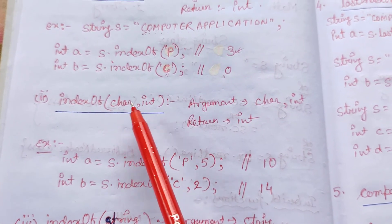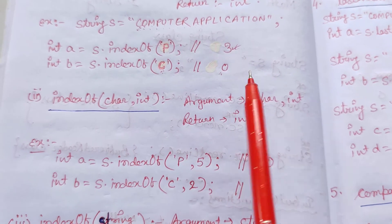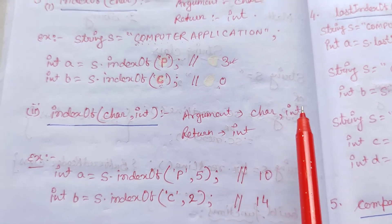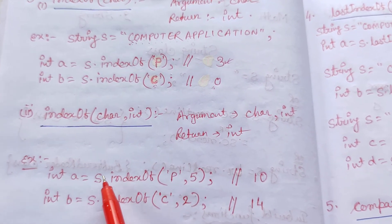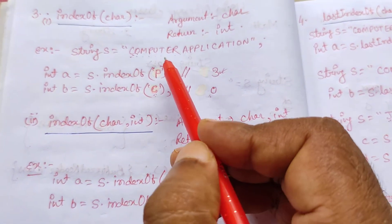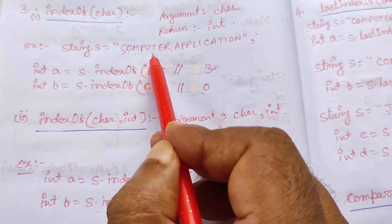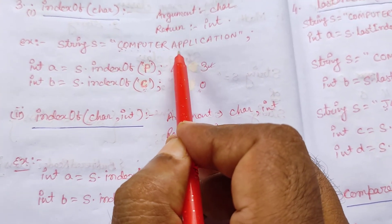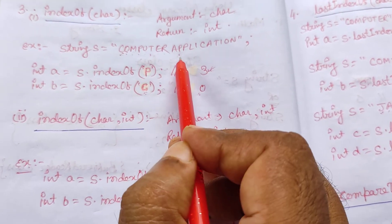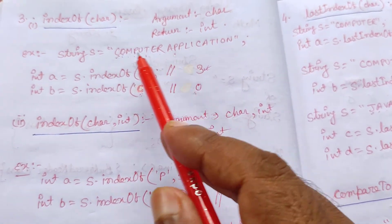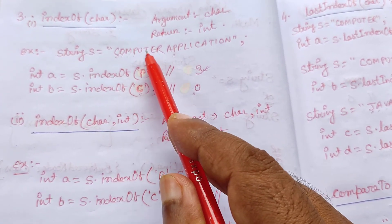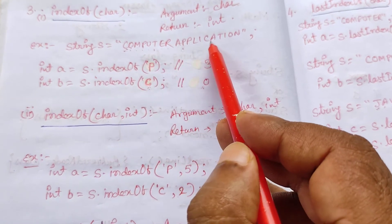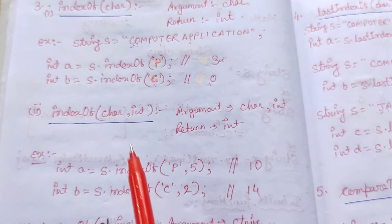Second form: indexOf(char, int) — argument is character and integer, return type is integer. It returns the index of a particular character starting from the given int position. For example, s.indexOf('p', 5) means from position 5 onwards, find the first 'p'. Counting 0-1-2-3-4-5-6-7-8-9-10, that 'p' is at position 10. Similarly, s.indexOf('c', 2) from position 2 — 'c' is at position 14. That is indexOf(char, int).